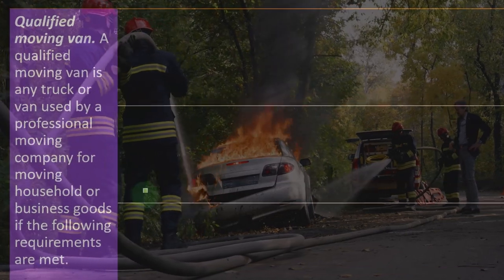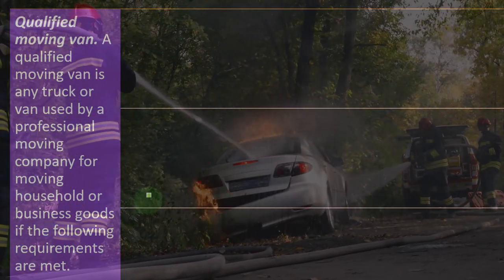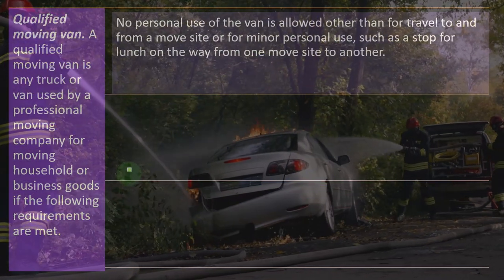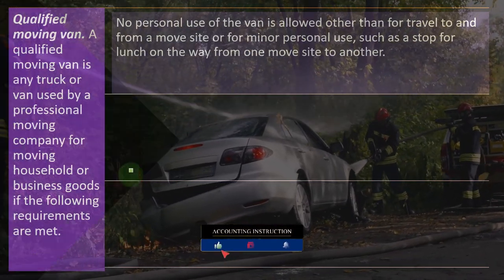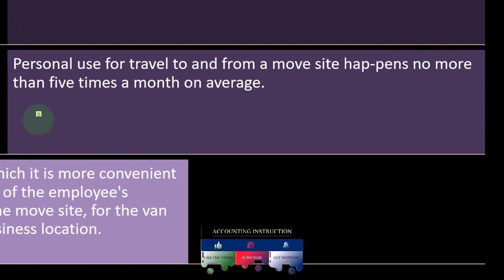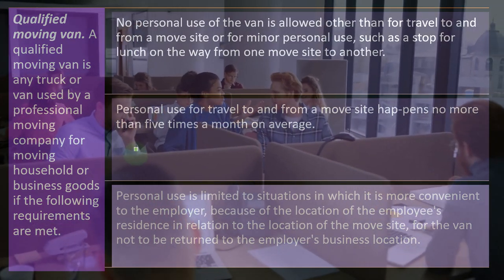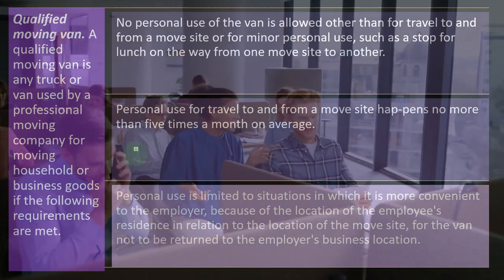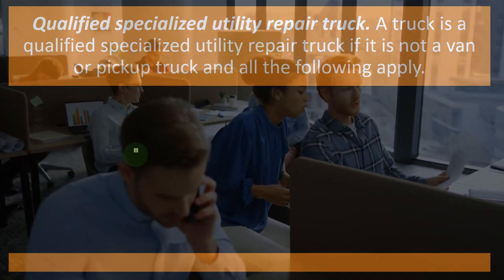A qualified moving van is any truck or van used by a professional moving company for moving household or business goods if the following requirements are met: no personal use of the van is allowed other than travel to and from a move site or minor personal use such as a stop for lunch; personal use for travel to and from a move site happens no more than five times a month on average; and personal use is limited to situations where it is more convenient to the employer, based on the employee's residence location relative to the move site, for the van not to be returned to the employer's business location. In other words, it's not a general commuting vehicle — its purpose is moving goods.